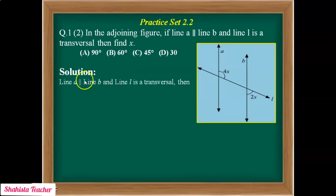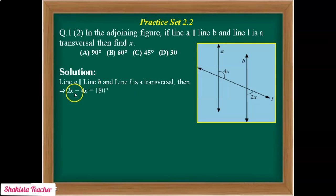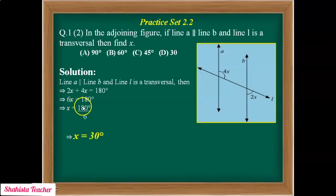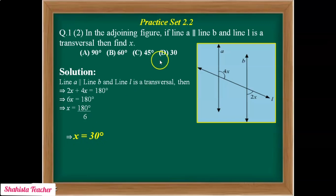Solution: Given line A parallel to line B and line L is the transversal. Using the linear pair of angles: 2X plus 4X equals 180 degrees. So 6X equals 180 degrees. Therefore X equals 180 divided by 6, which gives us 30. So X is equal to 30 degrees. The correct answer is option D.